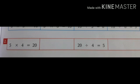Coming to the second question, you have to fill up: 5 × 4 = 20. Which will be the next multiplication fact? Yes, 4 × 5 = 20. Now coming to the division facts: 20 ÷ 4 = 5, this is the first division fact.